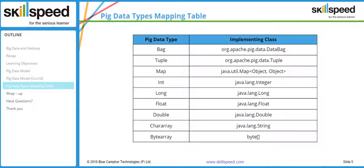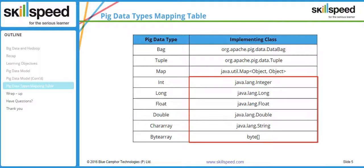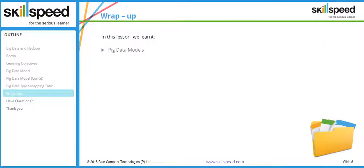We can also see the other data types used by Pig and their corresponding implementing classes. We can use int, long, float, double, chararray, and bytearray — and you can look at the corresponding implementing class from this table. In this lesson we have learned about the Pig data models such as tuple, atom, bag, and map.